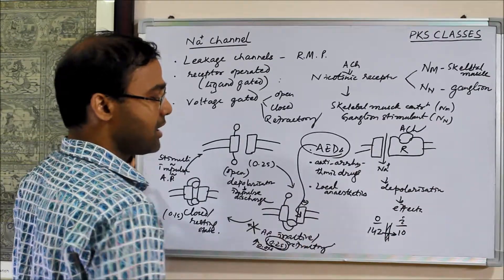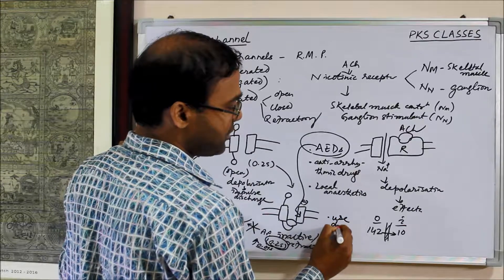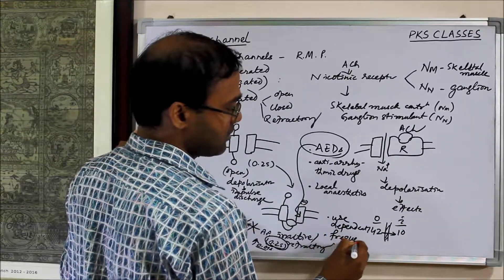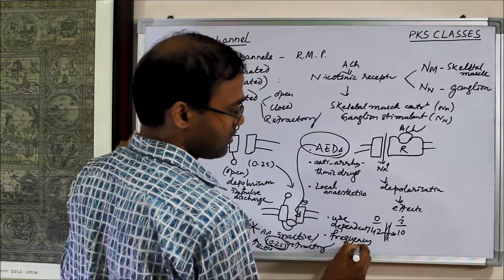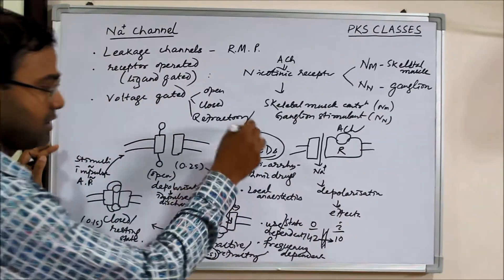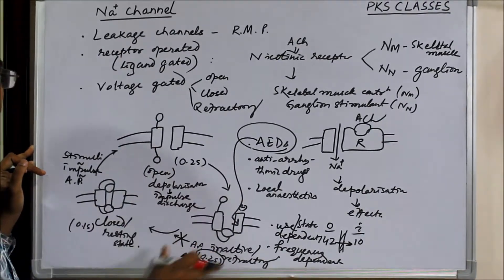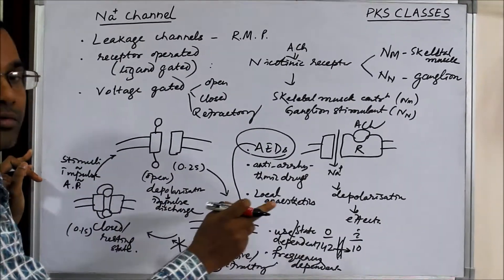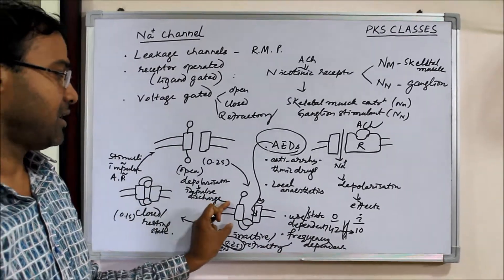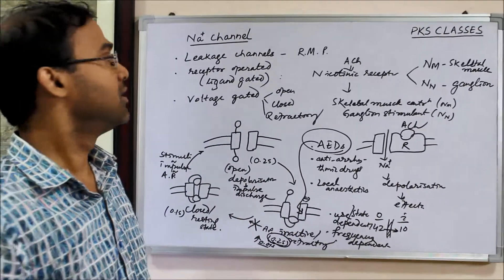They bind to this state and their blocking is called use dependent and frequency dependent. It selectively binds to the inactive state and is frequency dependent. Normal neurons are not affected. Only those neurons which have high frequency, they are affected. This state is delayed and the total cycle is normalized. In this way, this acts.